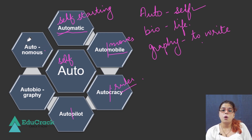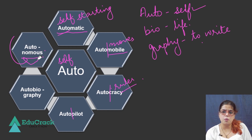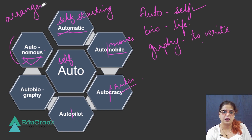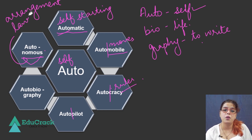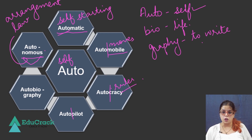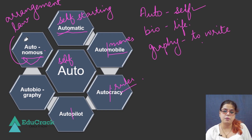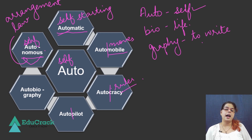Then we have autonomous. What do we mean by autonomous? The word nomos comes from the root word nomos, which basically means an arrangement or law. So autonomous means they have their own set of arrangements, their own set of laws. Like we have autonomous universities — these universities have their own set of laws, they follow their own rules and regulations, and have their own arrangements within themselves. The meaning of auto is self, so autonomous basically means an organization or university that has its own set of laws and its own set of arrangements.